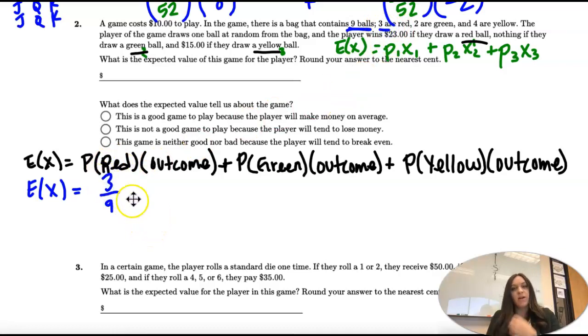So there's a 3 out of 9 chance of drawing red. If we draw red, we get $23, but we don't actually get $23 because we paid $10 to play. We lose $10 as soon as we start, so we have to account for the game cost.